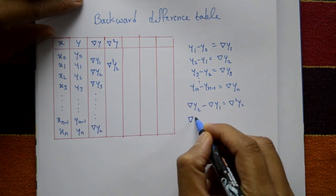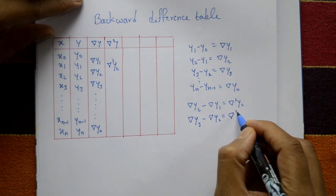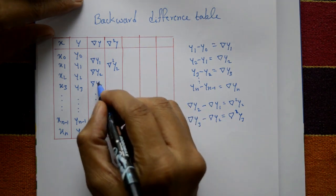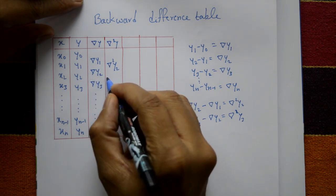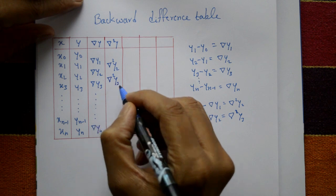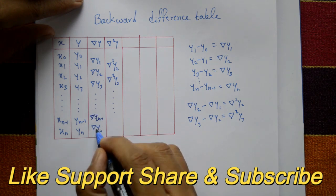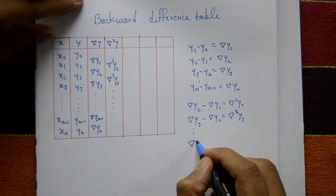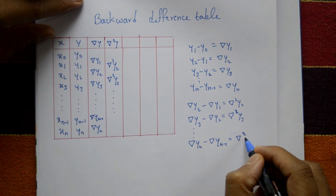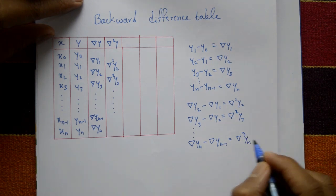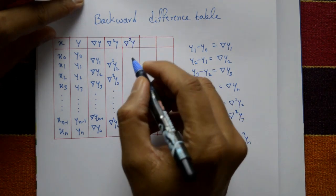First backward difference y3 minus first backward difference y2 is equal to second backward difference y3. And so on — the last one is first backward difference yn minus first backward difference yn-1, which is equal to the second backward difference yn.